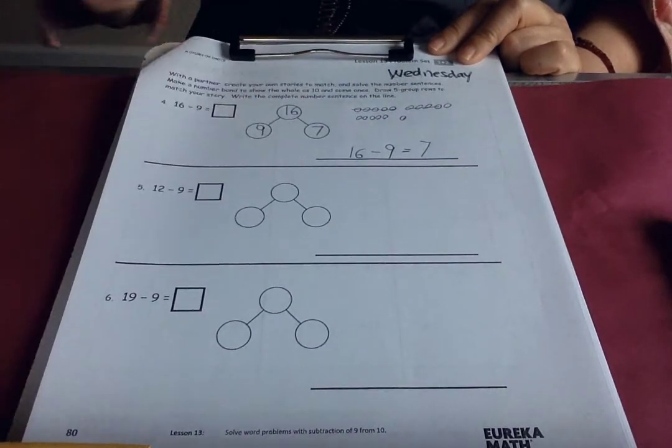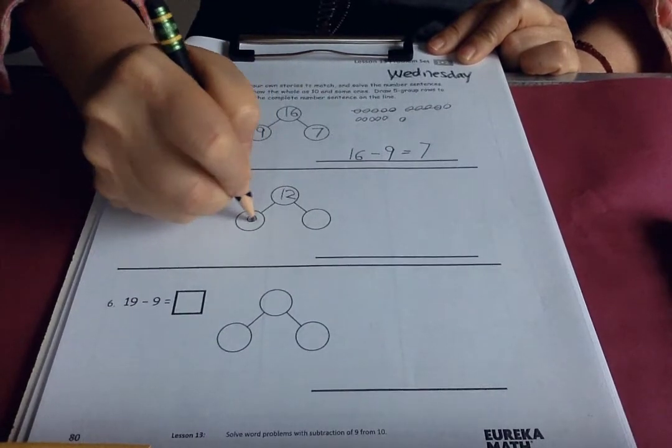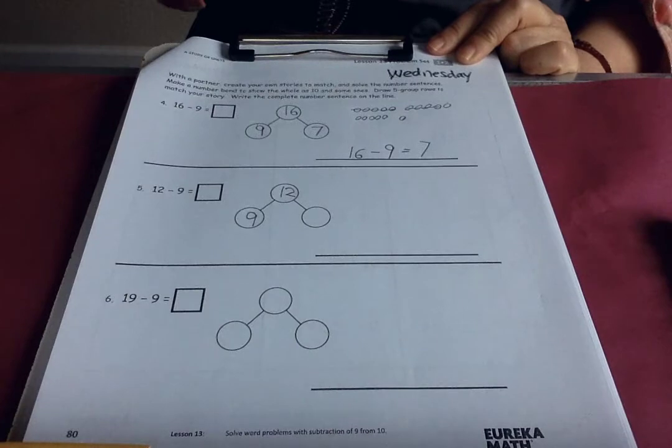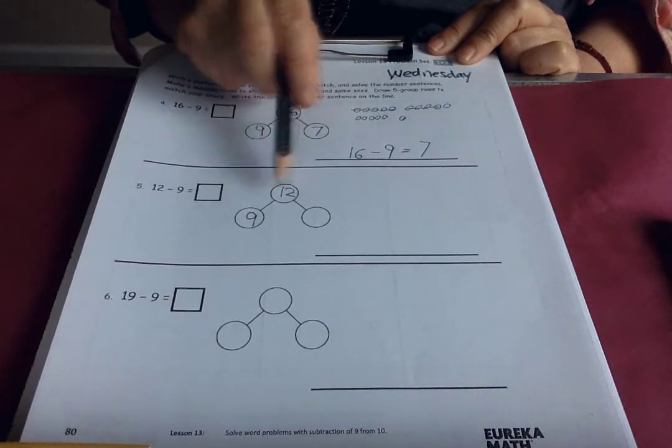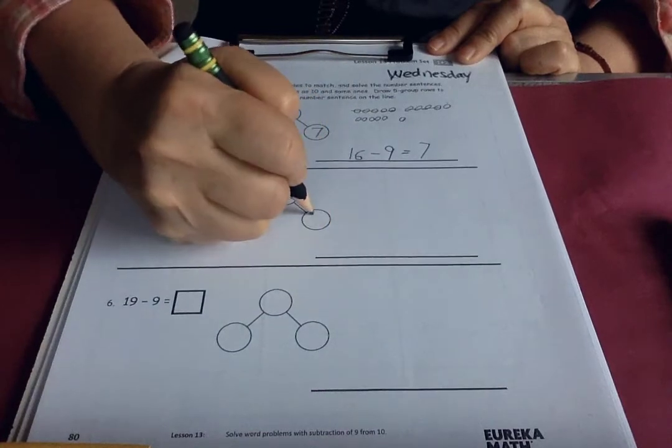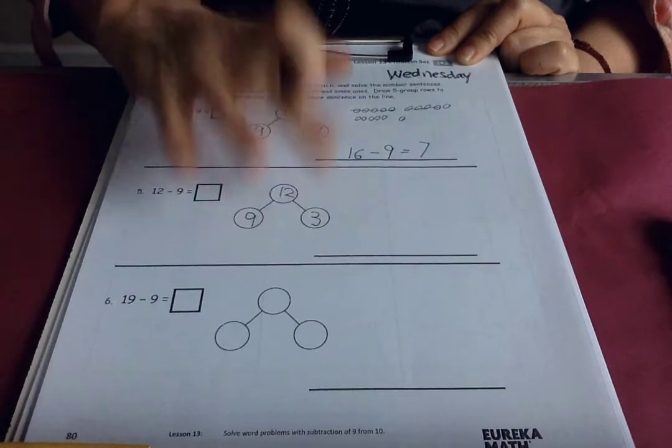Twelve take away nine. We could think of it like this. What's the missing partner? If this was ten, it would be two, but it's nine, so it's three. So we know twelve take away nine leaves three.